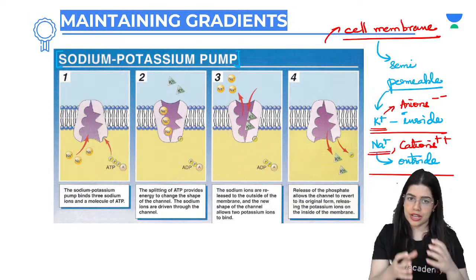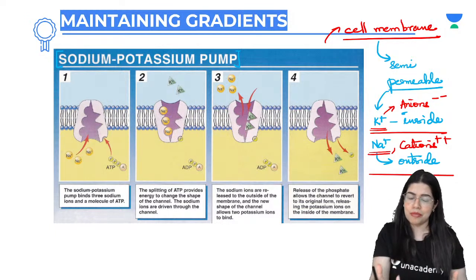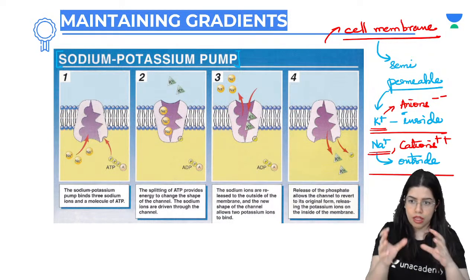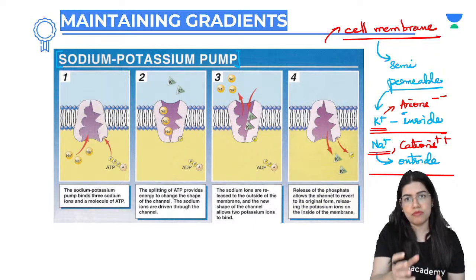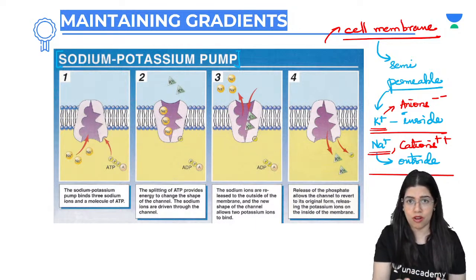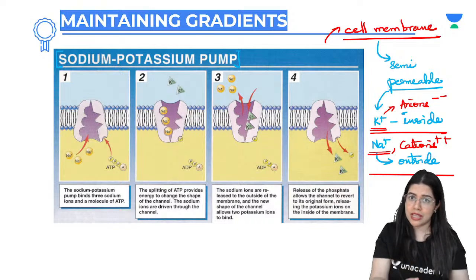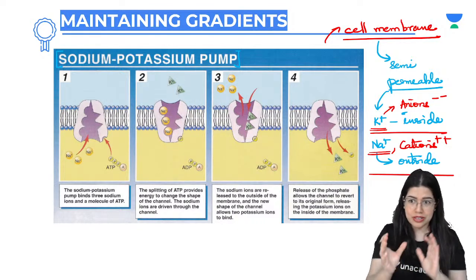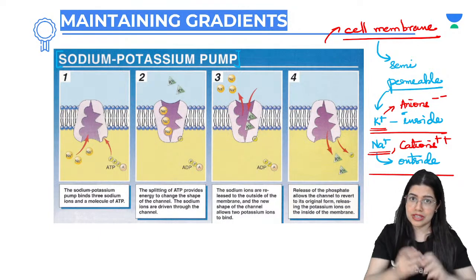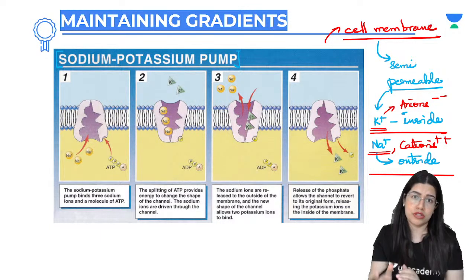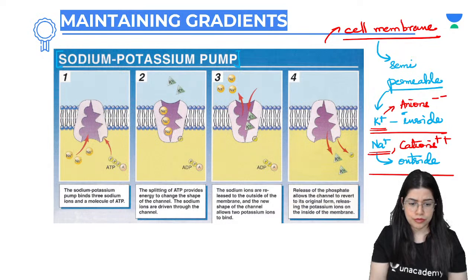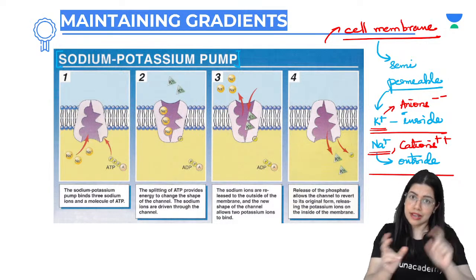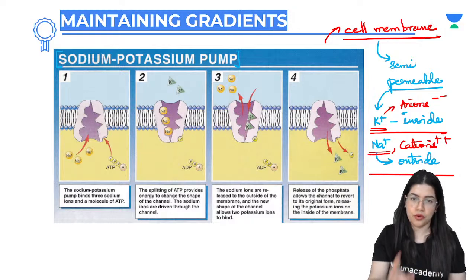There are also anions which are negative in charge inside, and cations outside. So the chemical composition inside the cell is different from outside. There's more sodium outside and more potassium inside. The electrical gradient also differs - the outside is more positive than the inside, or the outside is less negative than the inside.